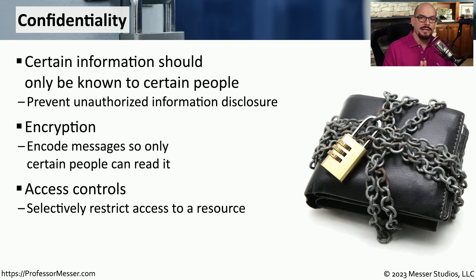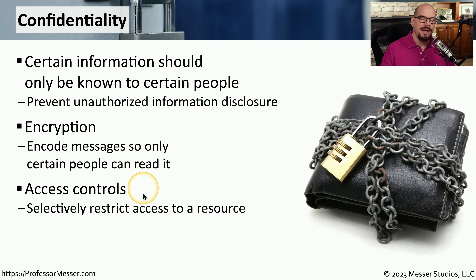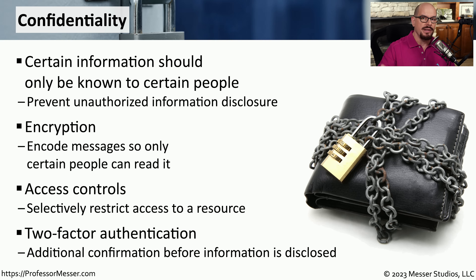Another common way to provide confidentiality is to set limits on what someone may have access to. We commonly do this with access controls. For example, this might allow someone in the marketing department to see all of the marketing presentations and make changes to those, but prevent all access to any of the accounting information. And if you've ever had to provide additional authentication factors when logging into a system, that's another type of confidentiality — adding those additional factors provides more confidentiality.